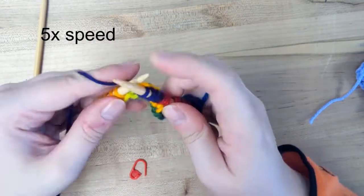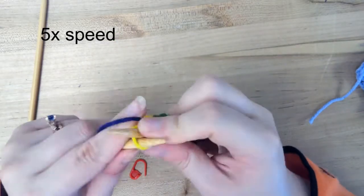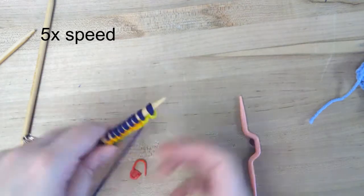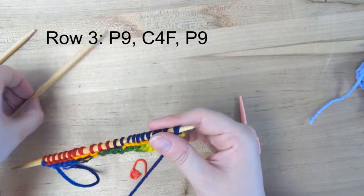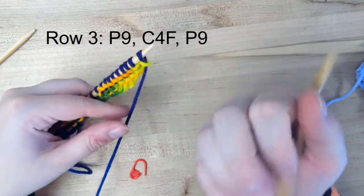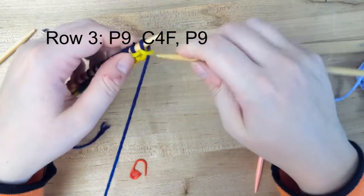And we're going to knit three. This is the row that we're going to get to the cabling in. We'll start with purl nine.